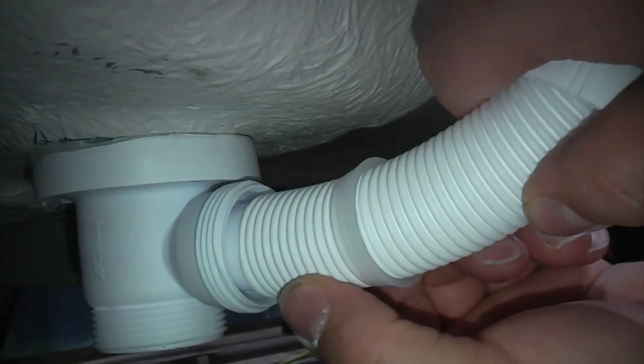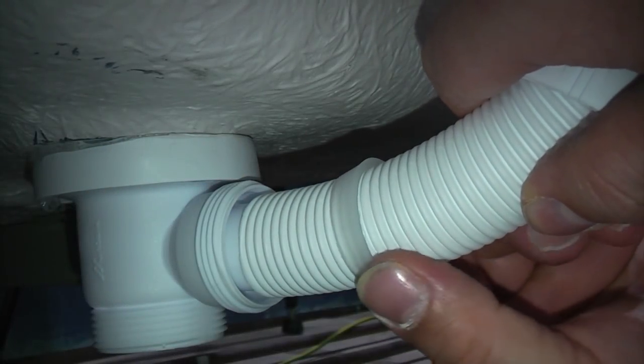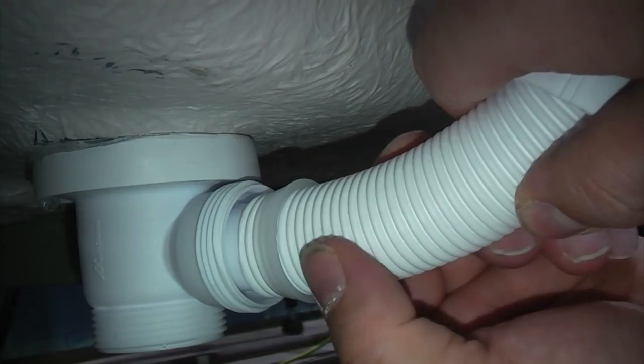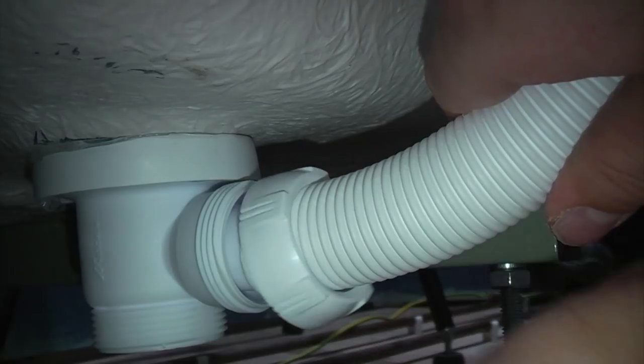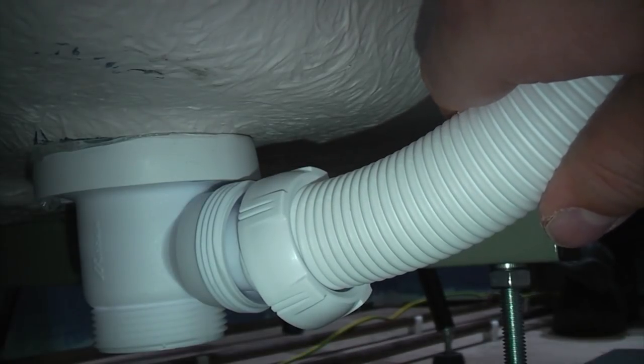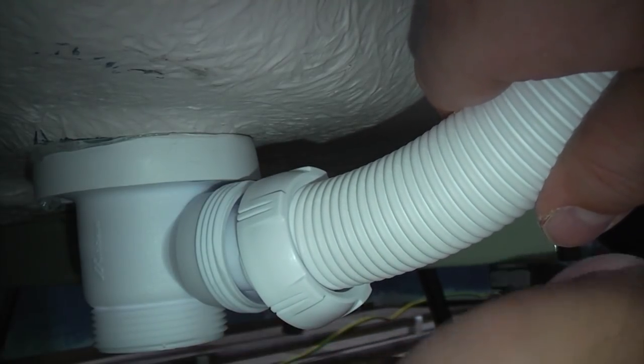Then I'm just going to push the overflow pipe onto there. Make sure it's pushed in fully, push the seal in, and then run the nut down and tighten it up. That's your waste connected to the bath then. We can then put the trap on.